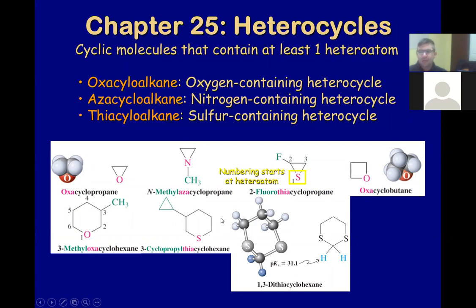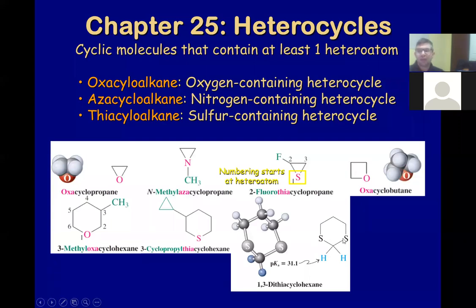Apart from this, the naming follows the same rules. For example, 2-fluoro starting from the sulfur: three-cyclopropyl-thiacyclohexane. The acidity will be slightly different between carbon analogs and heterocycles. For example, in dithiacyclohexane, the hydrogens next to sulfur are a little more acidic than normal, because sulfur attracts electrons more than carbon, making the whole structure slightly more acidic.